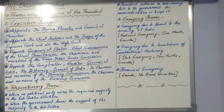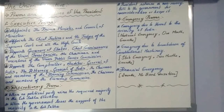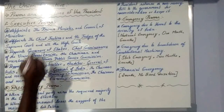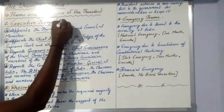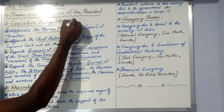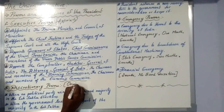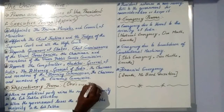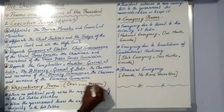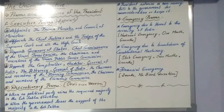The next one is discretionary powers — some special powers where the president can take his own decision. These are situations where the president exercises independent judgment.